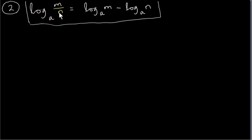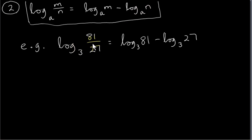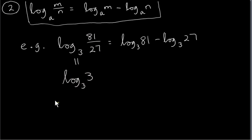Now the second property we want to look at is when the argument of the log function is a fraction. What we do is get the log of the numerator, which is m, minus the log of the denominator, which is n. Here is an example: suppose we want to get log of 81 over 27 to base 3. Now 81 divided by 27 is 3, so this is just log to the base 3 of 3. What power do we raise 3 to in order to get 3? The answer is 1. So the left hand side is actually 1.